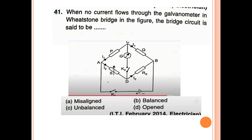41st question: When no current flows through the galvanometer in the Wheatstone bridge, the bridge circuit is said to be in a balanced condition. The answer is B — balanced condition.